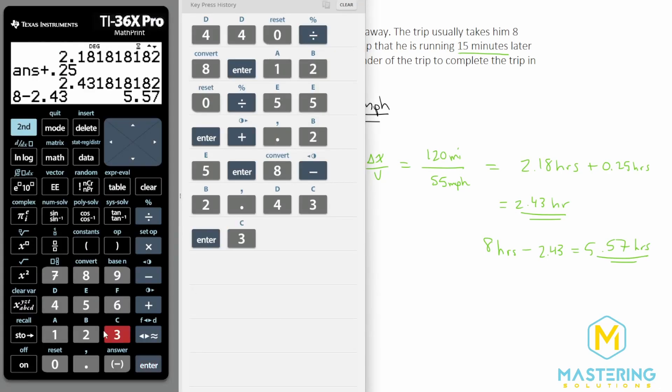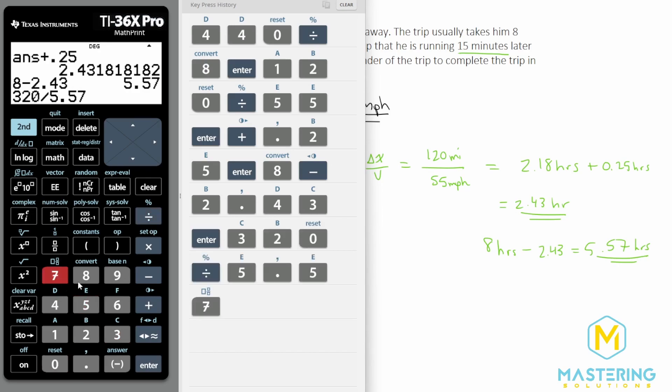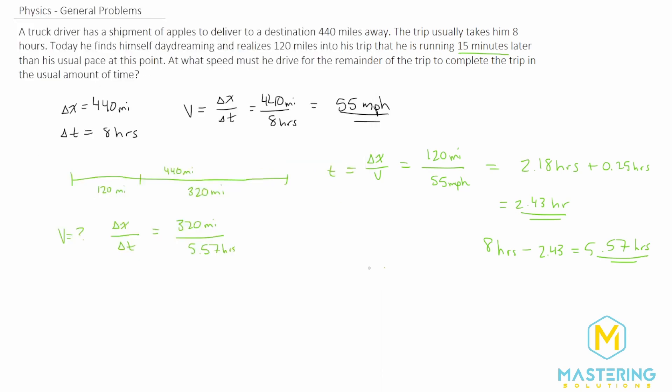So 320 divided by 5.57 gives us 57.45, which we can round down to 57 miles per hour. So this is the answer in miles per hour for how fast he'll have to go to do the trip in the same amount of time that he typically does for the eight hours.